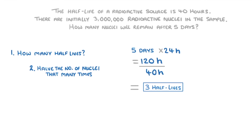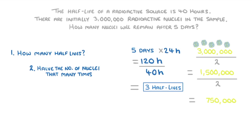So we take our 3 million radioactive nuclei and halve them 3 times: to get 1.5 million, then 750,000, and finally 375,000, which would be our final answer.